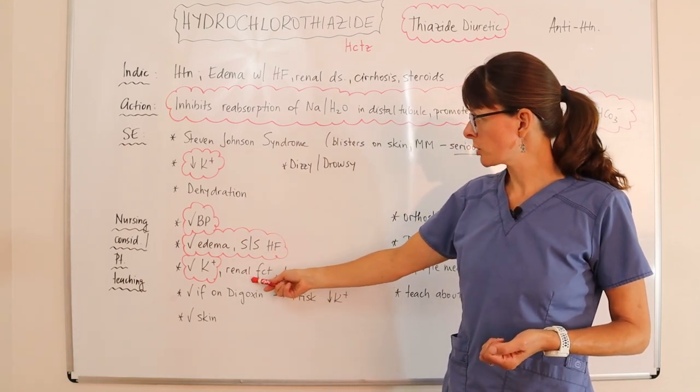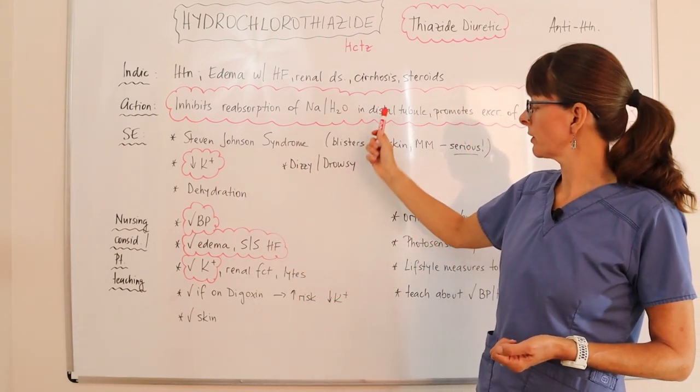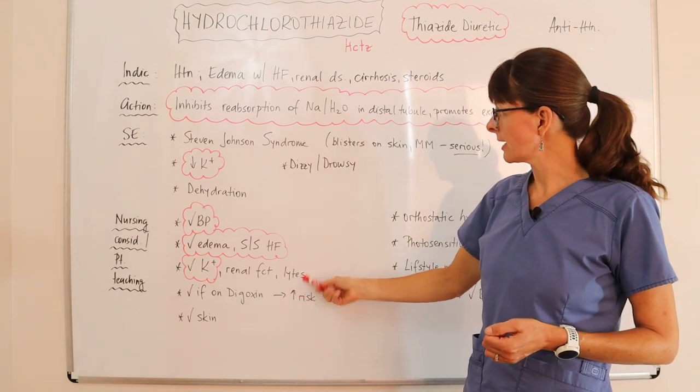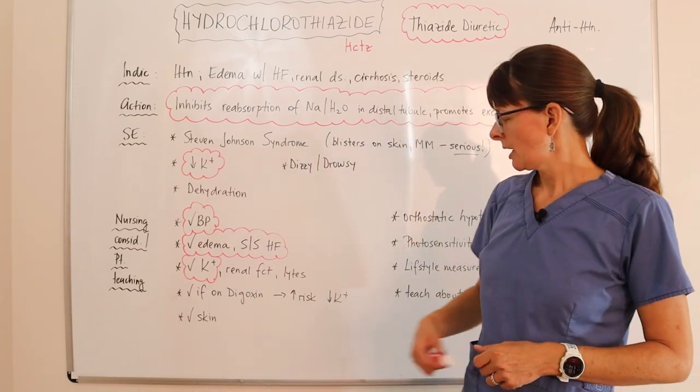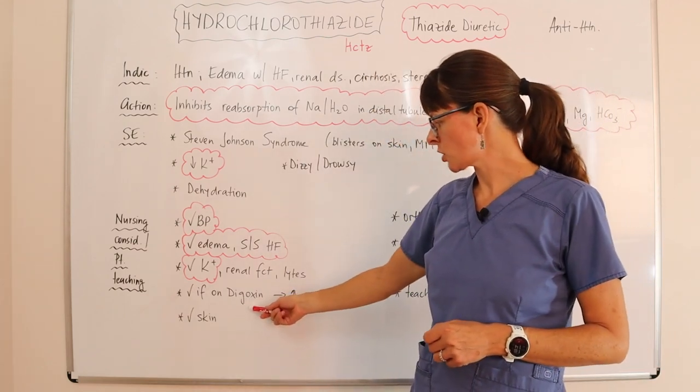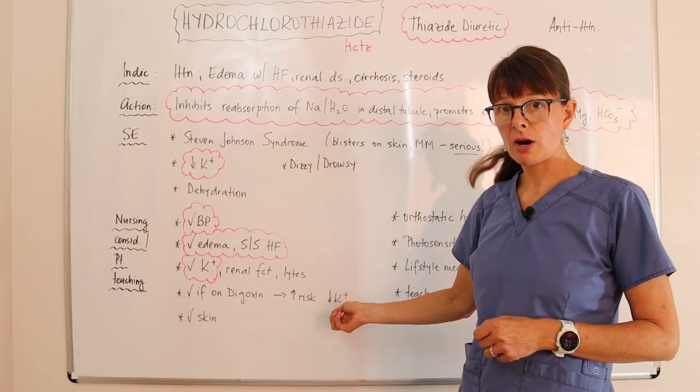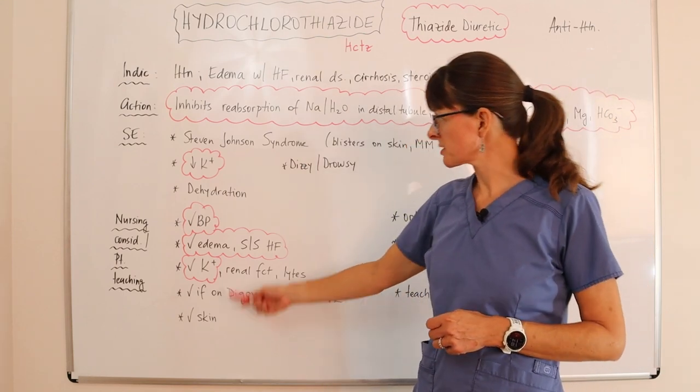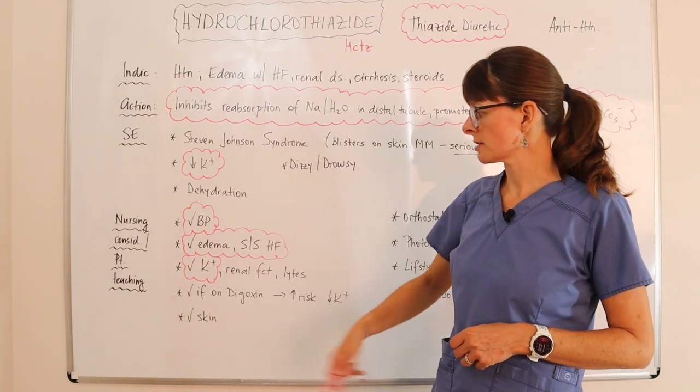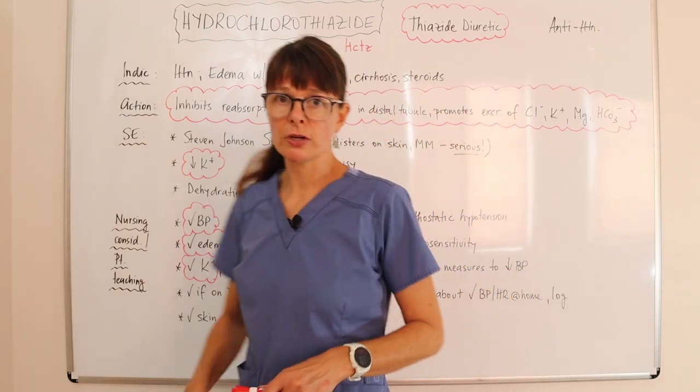We also want to check renal function because we know it affects the renal tubule and other electrolytes that we know it promotes the excretion of. If the patient is also on digoxin, there's an increased risk for hypokalemia. So be aware of that. And then of course, check for skin conditions, Stevens-Johnson syndrome after the administration.